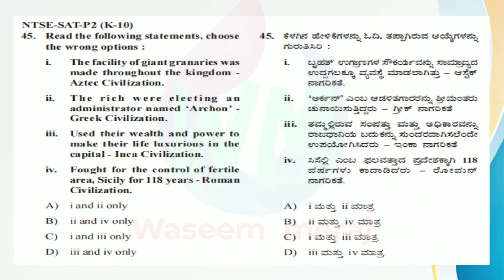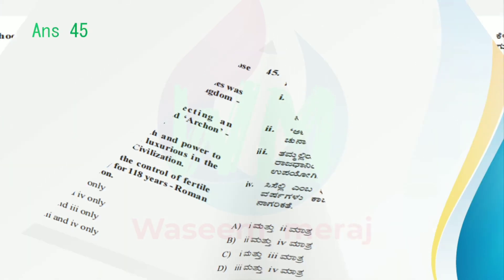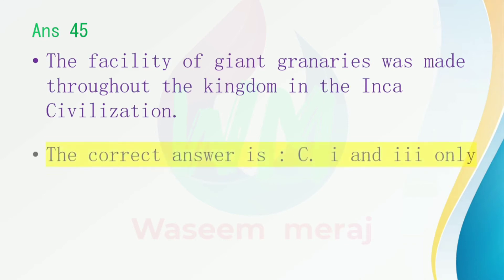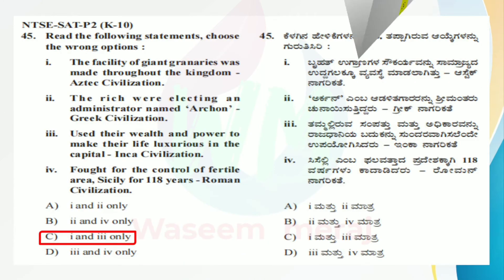Question number 45: Read the following statements and choose the wrong options. Statement 1: the facility of giant granaries was made throughout the Kingdom — Aztec civilization. Statement 2: the rich were electing an administrator named Archon — Greek civilization. Statement 3: used their wealth and power to make their life luxurious in the capital — Inca civilization. Statement 4: fought for the control of fertile area Sicily for 118 years — Roman civilization. Options: A — first and second only, B — second and fourth only, C — first and third only, D — third and fourth only. Answer: the facility of giant granaries was made throughout the Kingdom in the Inca civilization, not the Aztec. So the correct answer is C — first and third only.